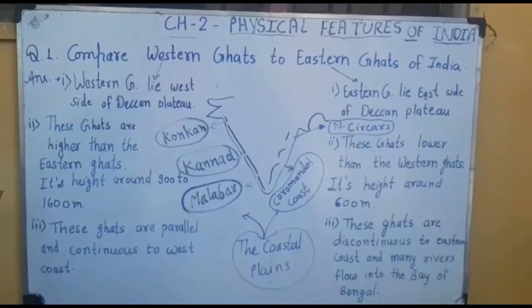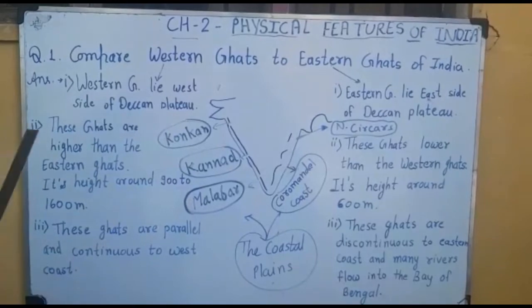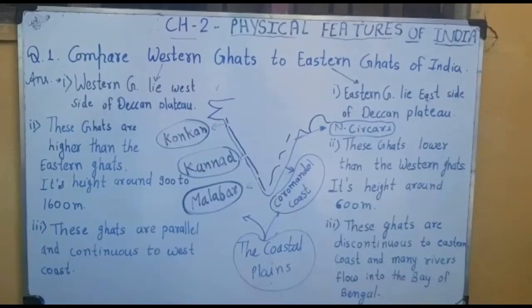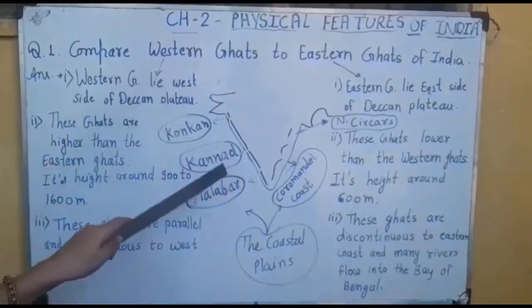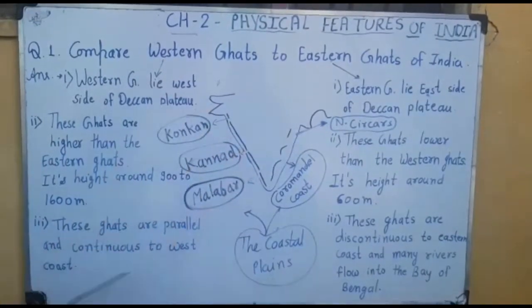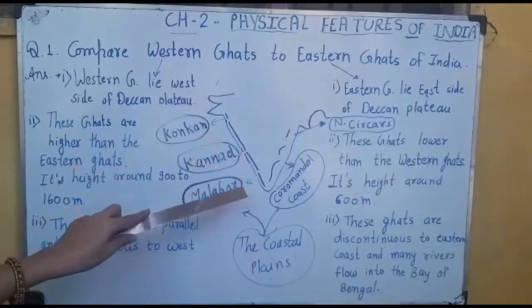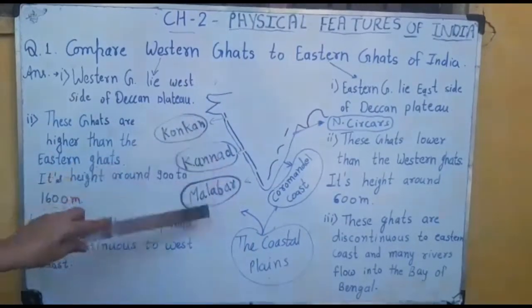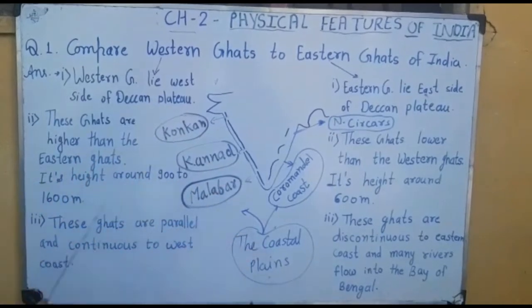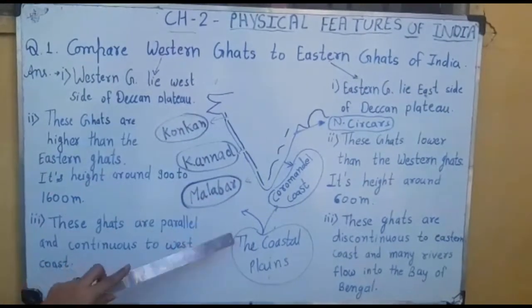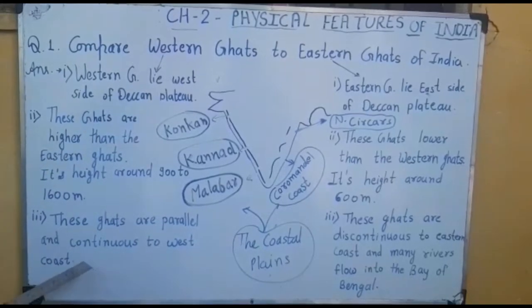I hope you understand the differences between Western Ghats and Eastern Ghats. This is a very important question for the examination, so note it down. From this map we move to our next topic: coastal plains. The land area between the water body and the land — between the Ghats and the ocean water — these plains are called coastal plains. The coastal plains are parallel to the eastern and western coasts.